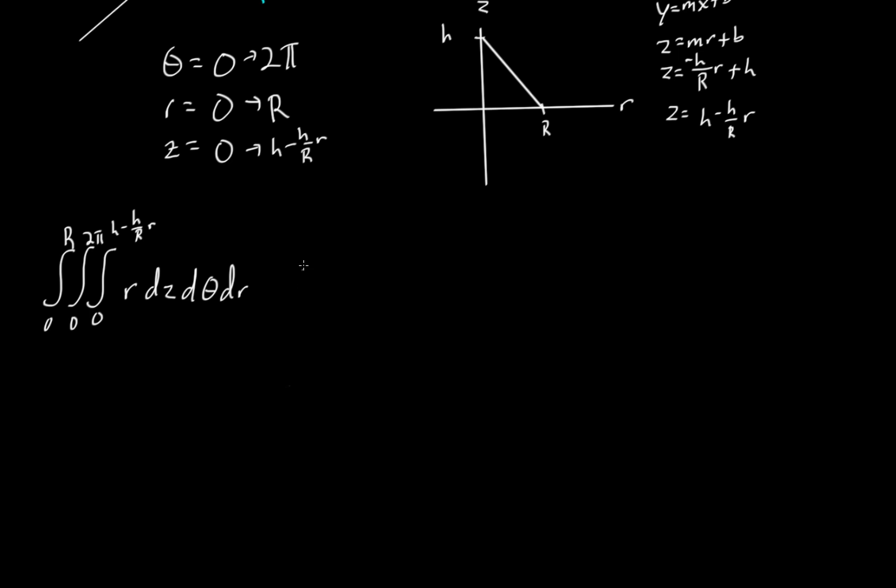You may ask, why did I arrange it this way? You can actually integrate these in any particular order. However, this arrangement in this particular function makes the math a little easier, simply because we do not have any thetas or z's in any of our bounds. Therefore we're not going to have to evaluate that integral over the entire range. It's just going to become a constant with respect to that particular variable. So we'll actually evaluate it only in this last particular integral, and it just makes the math a little bit easier.